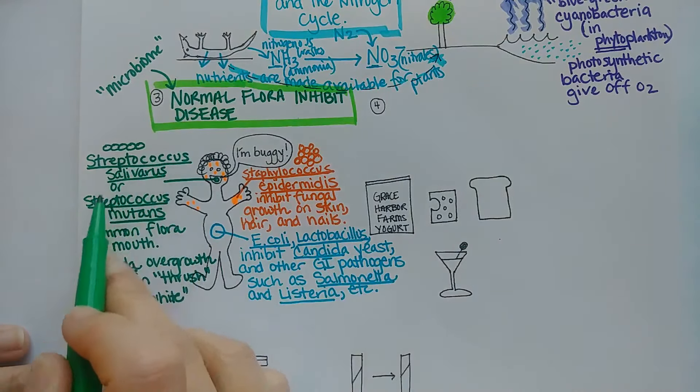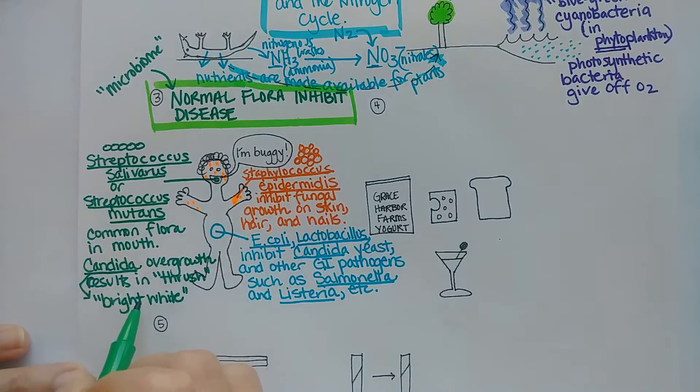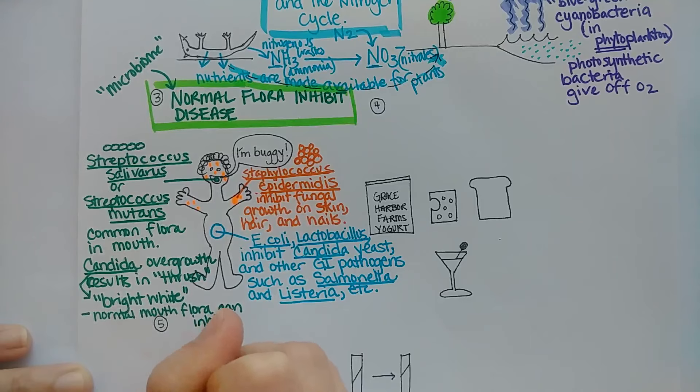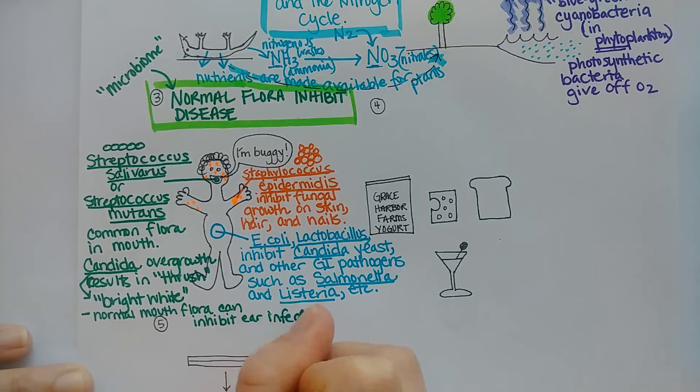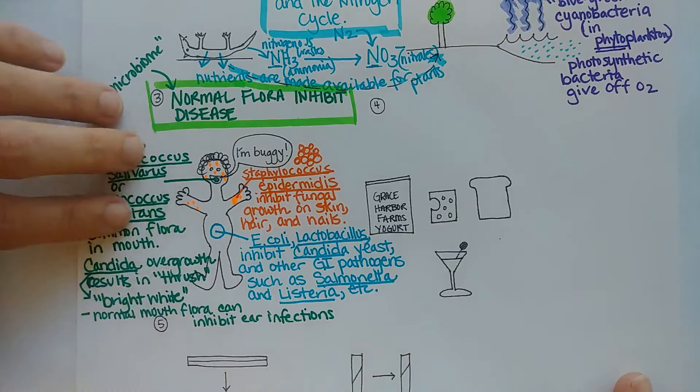Having these normal flora here also seem to be important in not only preventing thrush, but also normal mouth flora help to prevent things like ear infections and probably things like strep throat. For example, if you have enough of these other kinds of normal flora in your mouth and in the back of your throat...